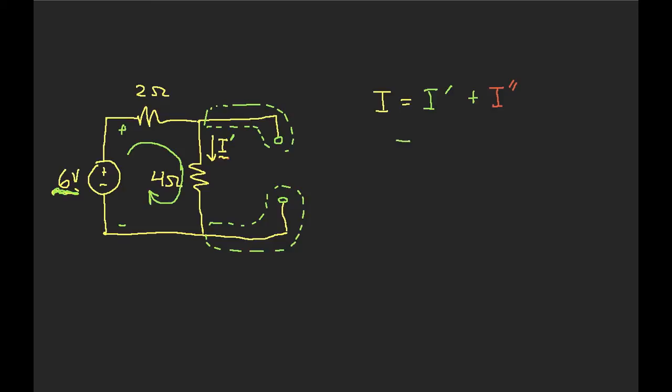So, I can get then that the current, I prime, is going to be the total voltage, which in this case is 6 volts, divided by the total resistance, which is 2 ohms plus 4 ohms. So, I prime is going to be 1 amp. Okay, well, that wasn't so bad, was it?